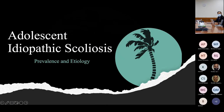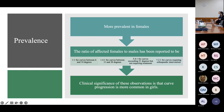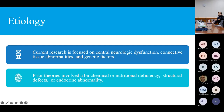Regarding prevalence and etiology: it's more prevalent in females, which becomes more important when talking about curve degrees and curves requiring intervention. There's actually a one-to-one ratio in males to females for smaller asymmetry curves, but once you reach a diagnosis of actual scoliosis, the predilection toward female gender increases substantially — up to about a 7.2-to-1 ratio in curves that require orthopedic intervention.